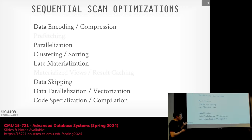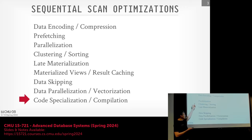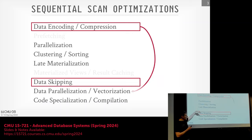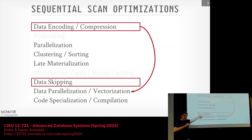For this semester, we're not going to talk about materialized views or prefetching. For this class, today's lecture is about data encoding and compression. The data encoding part will then help us for next class to talk about how we can encode data in such a way that we can get better parallelism through vectorization.